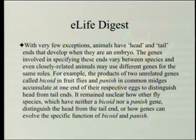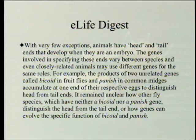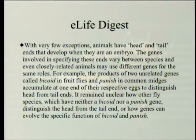For example, the products of two unrelated genes — called bicoid in fruit flies and pannish in common midges — accumulate at one end of their respective eggs to distinguish head from tail ends. So in midges it's pannish, and in fruit flies it's bicoid. It remained unclear how other fly species, which have neither a bicoid nor a pannish gene — those are brand new genes, or almost brand new — distinguish head from tail, or how genes can evolve the specific function of bicoid and pannish.